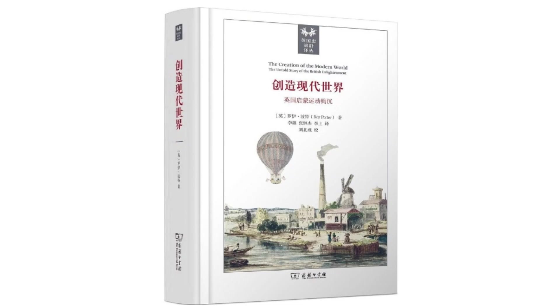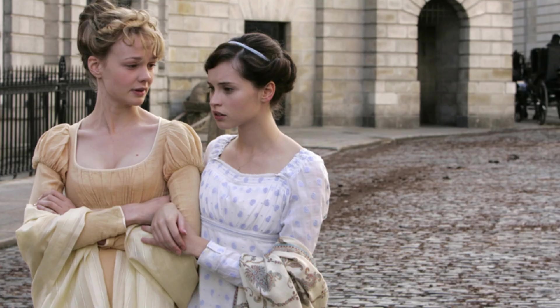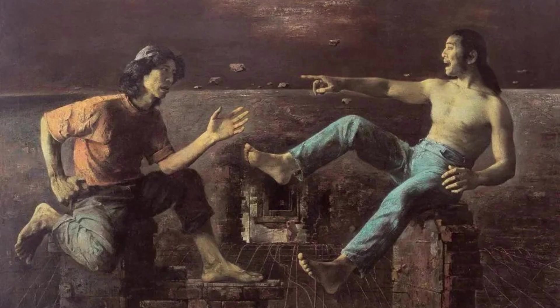In addition to the characterization, the descriptions in the novel are also very detailed and precise. For example, the author's descriptions of the city of Bath and the building of Northanger Monastery are very detailed, allowing the reader to feel the atmosphere and culture of the time.